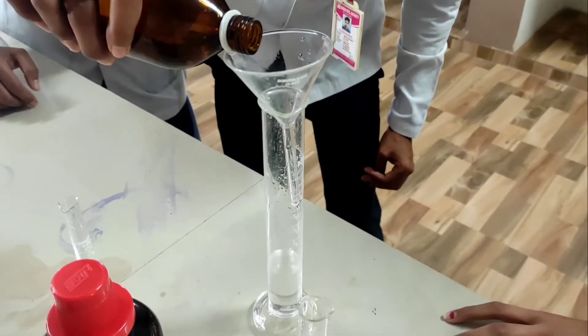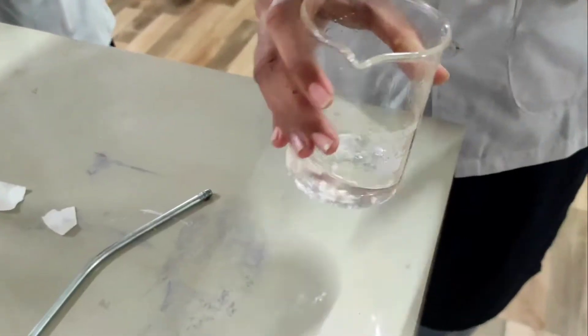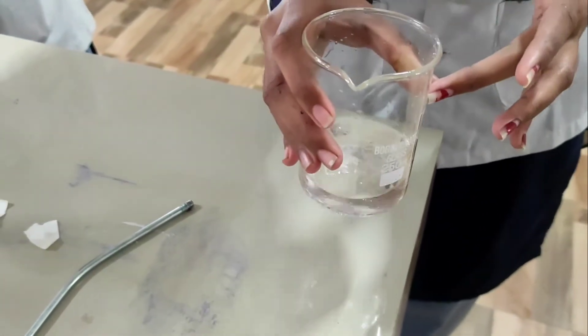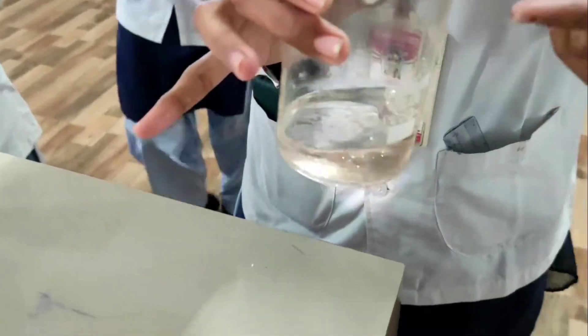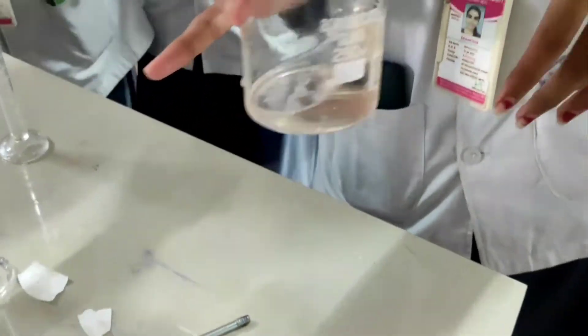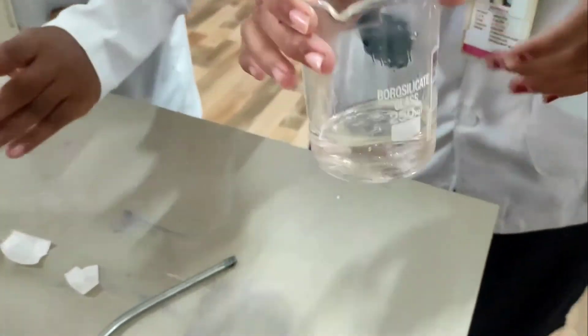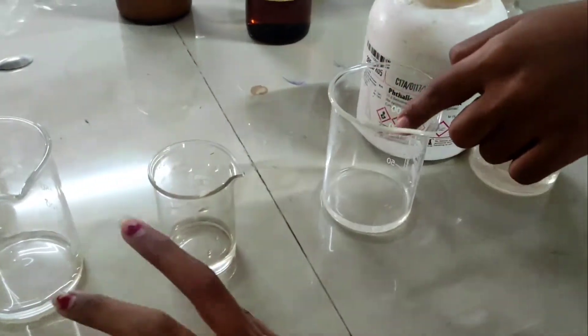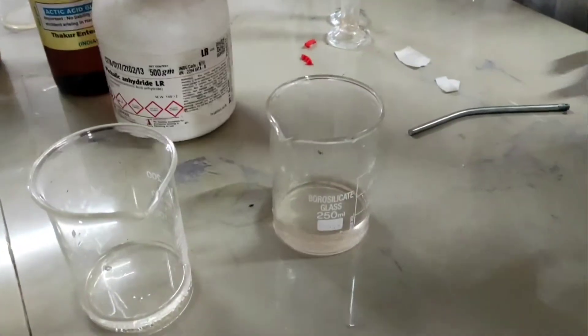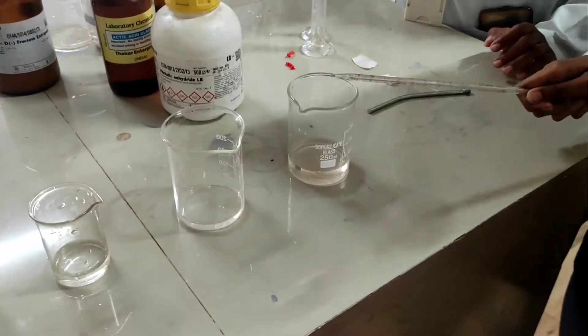The next step is to cut Whatman paper to a rectangular size, place a mark and draw a straight line about one centimeter from the bottom, and mark three spots on that line where you're going to put your samples. Your samples include three: one standard glucose, second standard is lactose, and the third is a mixture of both glucose and lactose. You have to identify and compare the RF value of the sample with the standard ones.